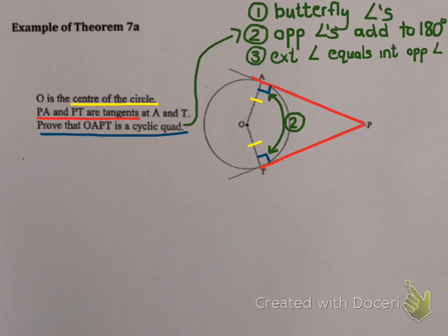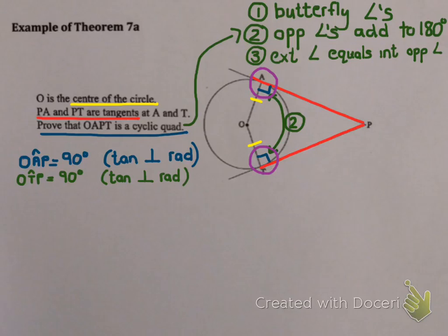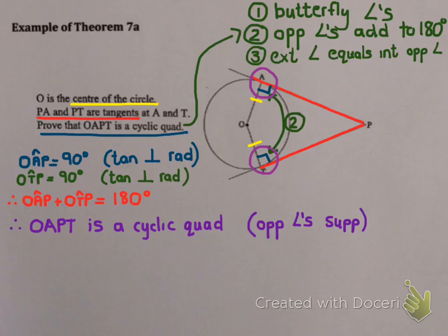I can prove that these two angles, A and T, add to 180 degrees. So why was that 90? I need to explain that. Angle OAP equals 90 degrees, because my tangent is always perpendicular to my radius. So that's theorem 7A in action. Now I need to explain where the other 90 degrees come from. And it's exactly the same thing. OTP is 90, because my tangent is perpendicular to my radius. That's perfect, because that means that these two angles add to 180 degrees. That means OAPT is a cyclic quad. And my reason? Because I've just proved that my opposite angles are supplementary.